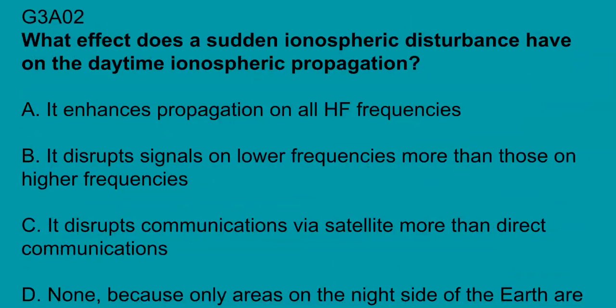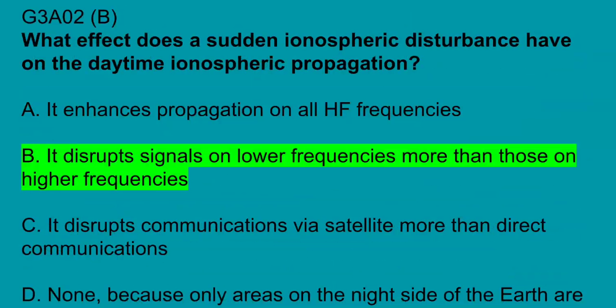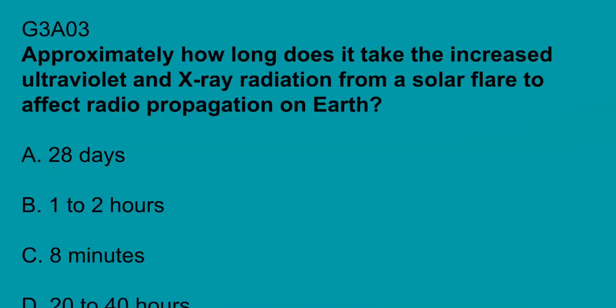G3A02: what effect does a sudden ionospheric disturbance have on daytime ionospheric propagation? It disrupts signals on lower frequencies more than those on higher frequencies. G3A03: approximately how long does it take the increased ultraviolet and X-ray radiation from a solar flare to affect radio propagation on Earth? That's eight minutes.